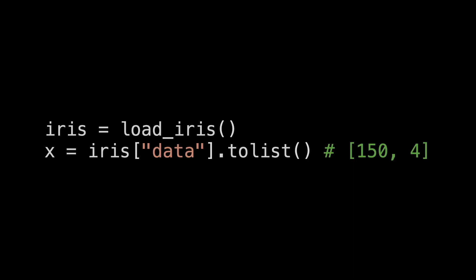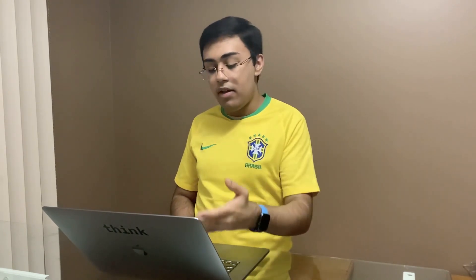The first thing I do is load in the iris dataset into a variable called iris, then take the data element — the 150 instances of four features each — and load them into a variable called x, converted to a list. There's also a target variable, but don't worry about that just yet. The shape of the x array is currently 150 by 4, meaning 150 arrays where each array contains four values — 150 instances of different flowers, four different attributes each.